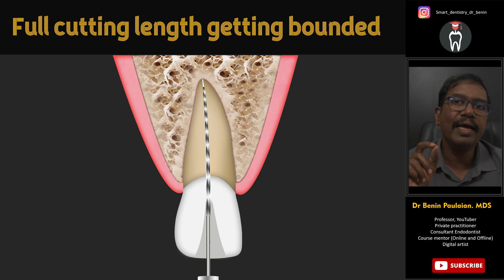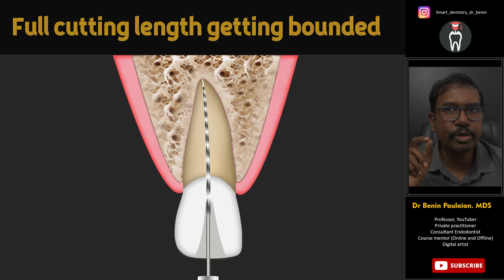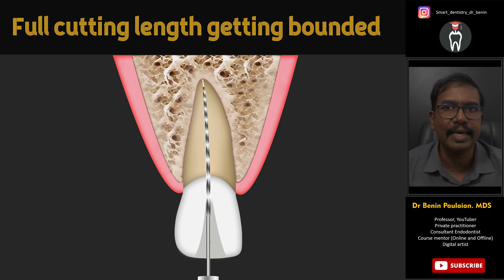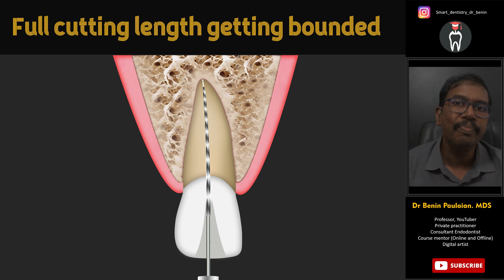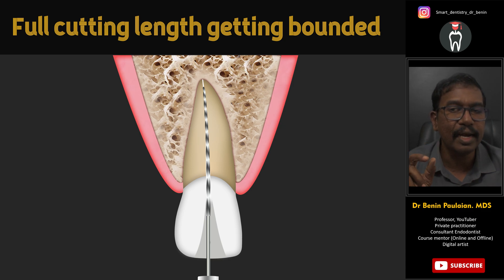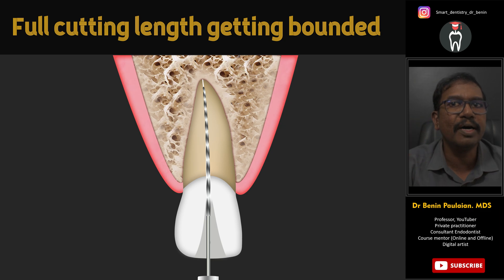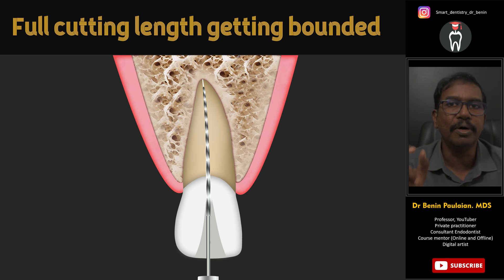The tip is active and sharp, so whenever you are rotating a hand file inside the root canal it goes deeper and deeper inside the canal and it gets bounded. So what is a bounded file? Whenever you are rotating the handle of the file but the tip no longer rotates — it is like a disconnection between the handle and the tip — because throughout the part of the canal the file is getting bounded.